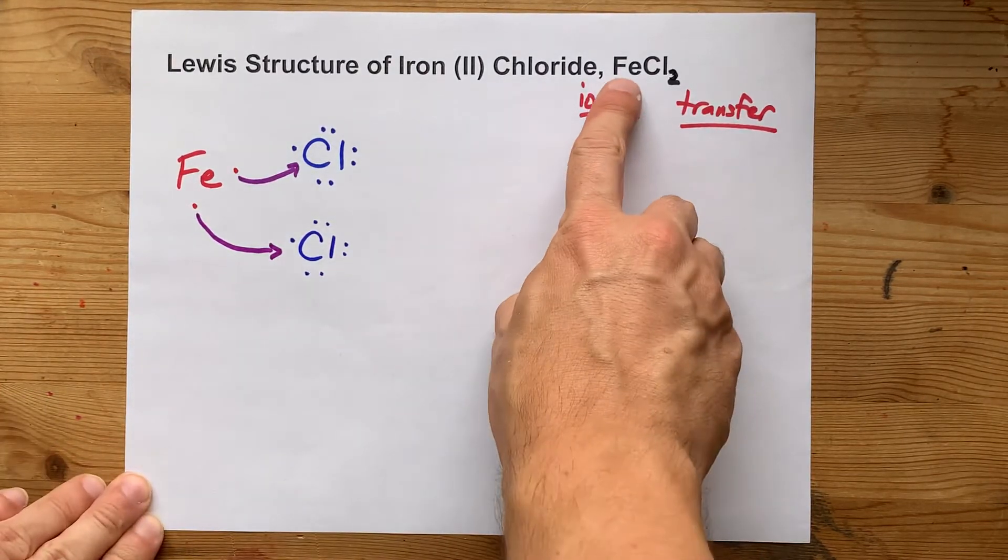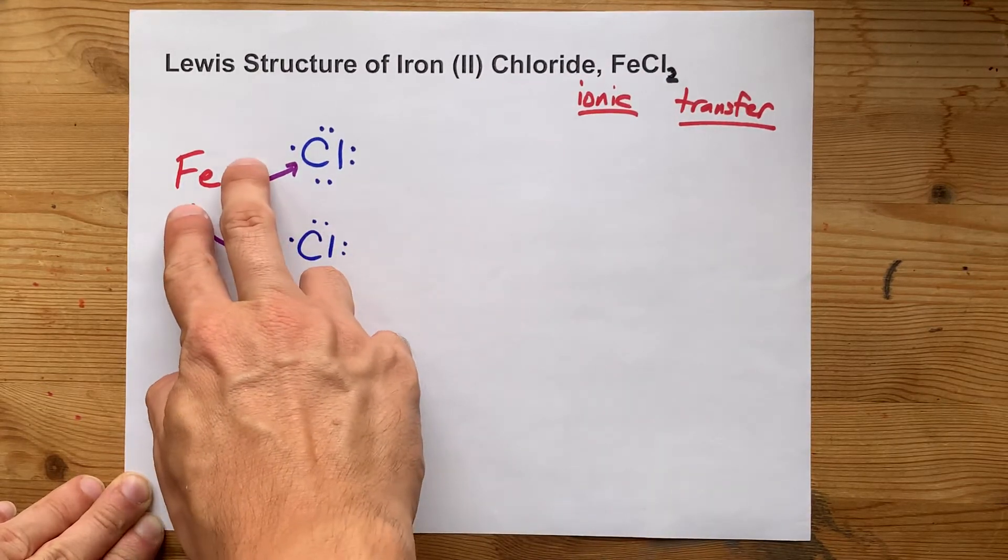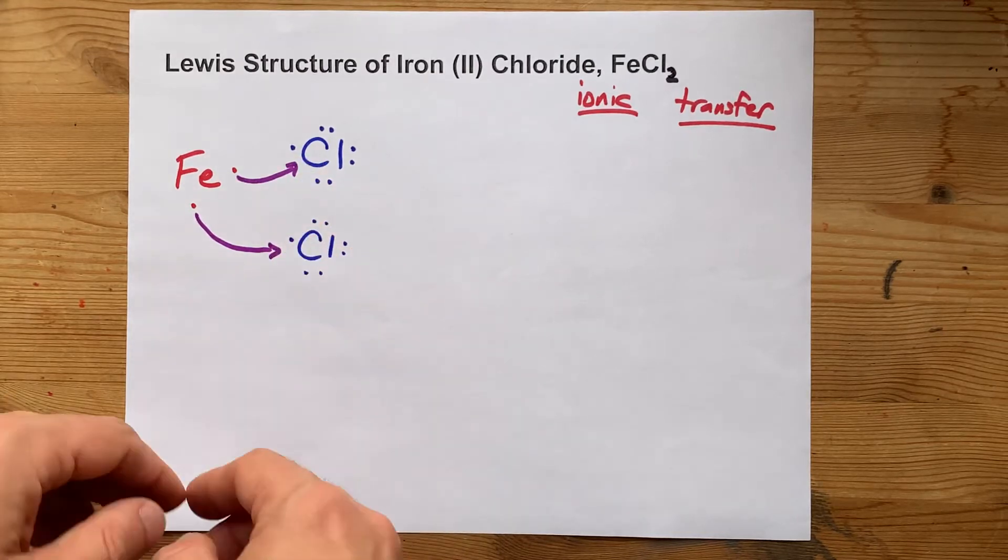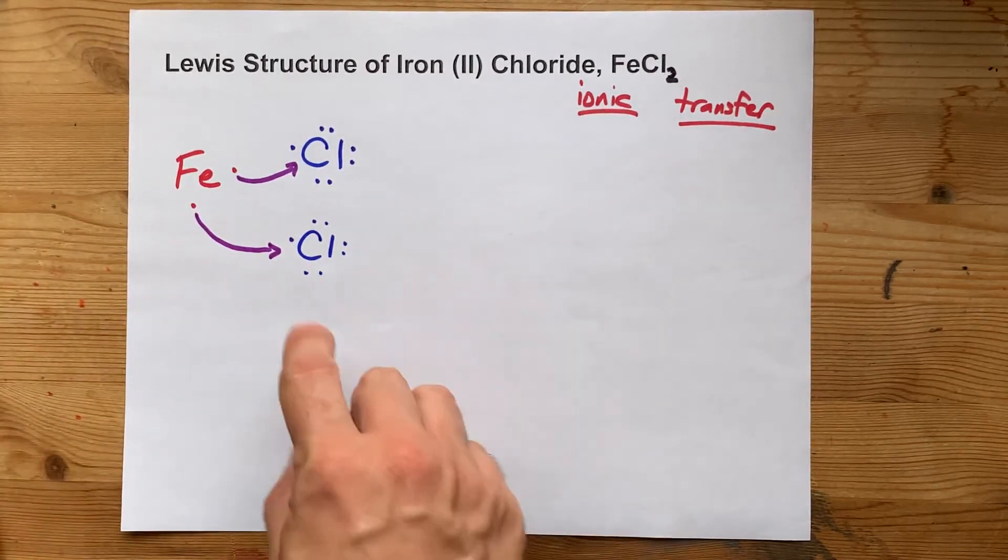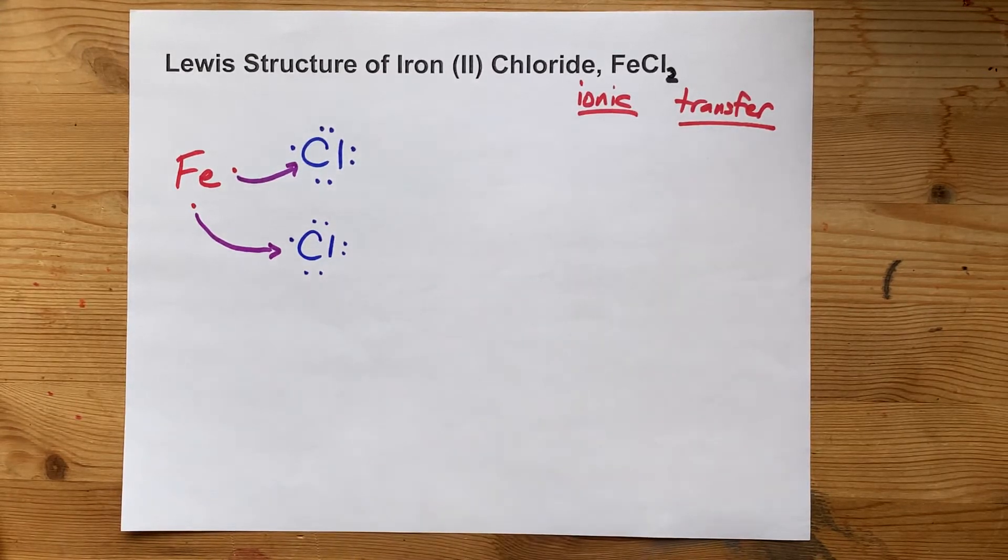That's why the formula is FeCl₂, because you need two chlorines to absorb the two electrons from this iron, and that's because each of the chlorines can only accept one electron each. They already have seven, and to complete the octet is only one more extra.